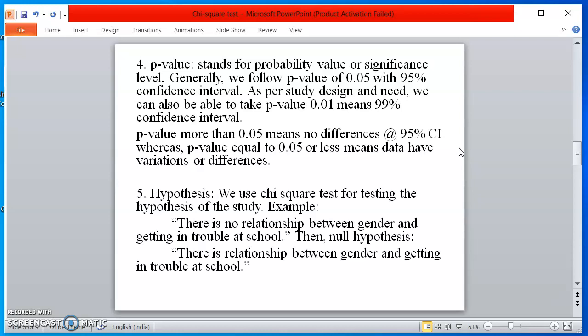And we will always have a null hypothesis. Null hypothesis will always reject our research hypothesis. So here, null hypothesis is denying our hypothesis by saying there is a relationship between gender and getting in trouble at school.